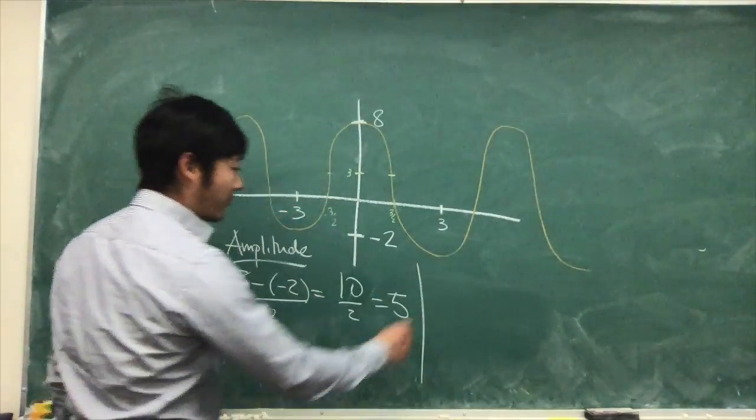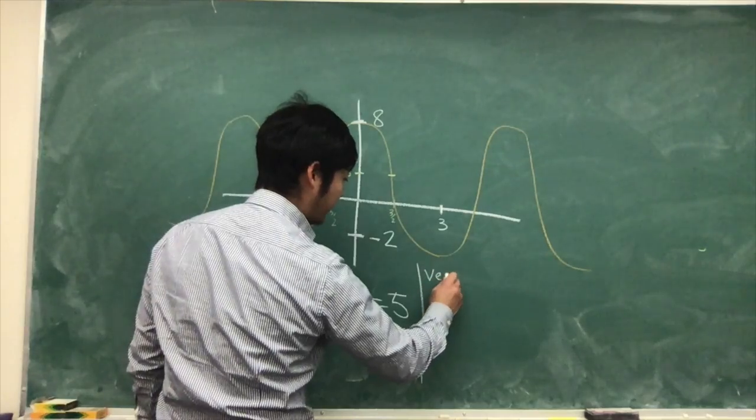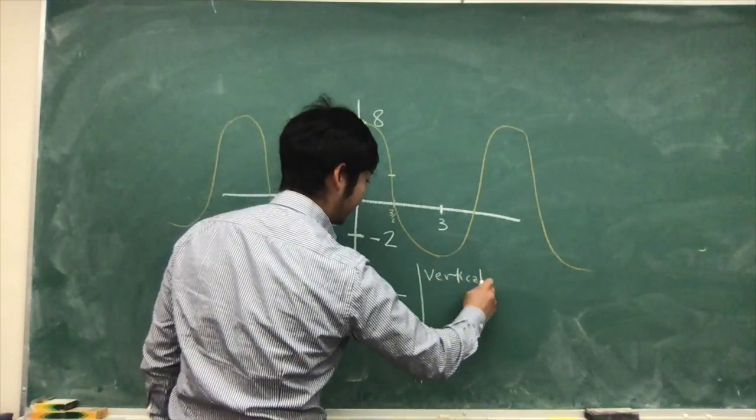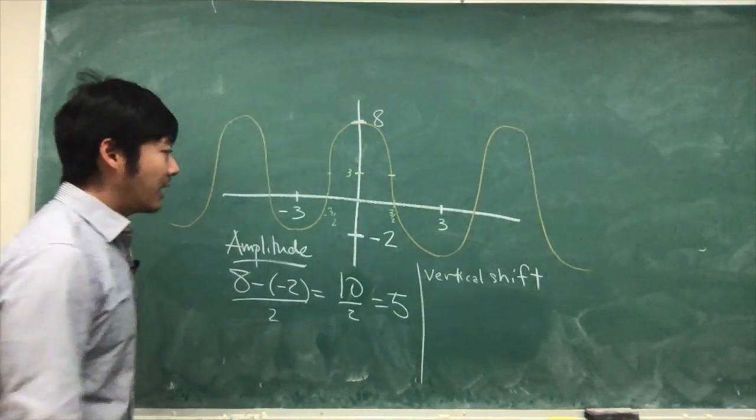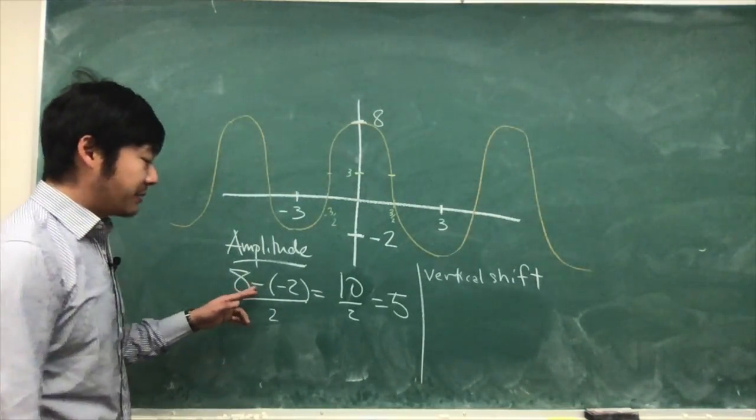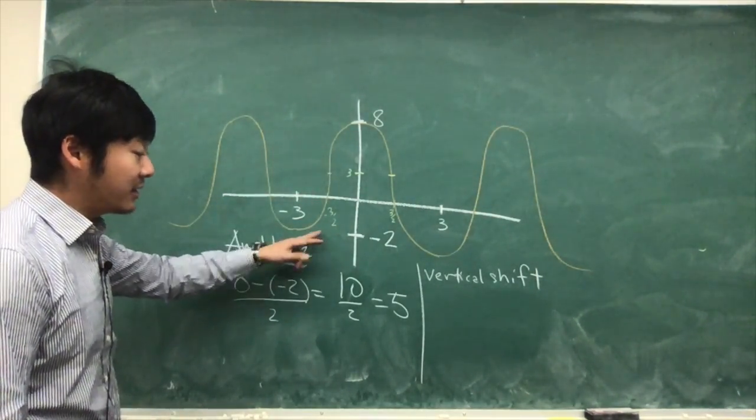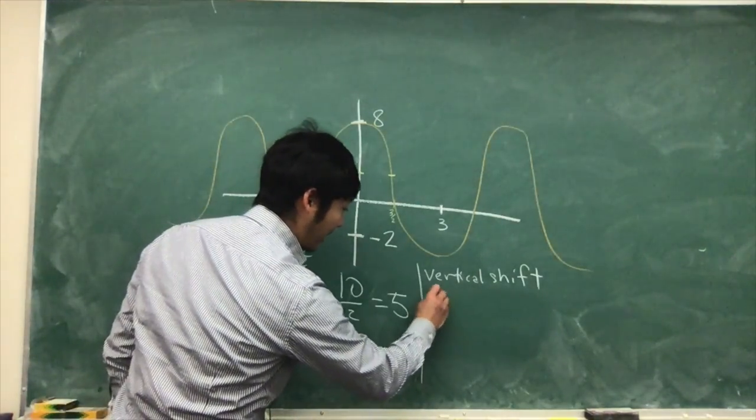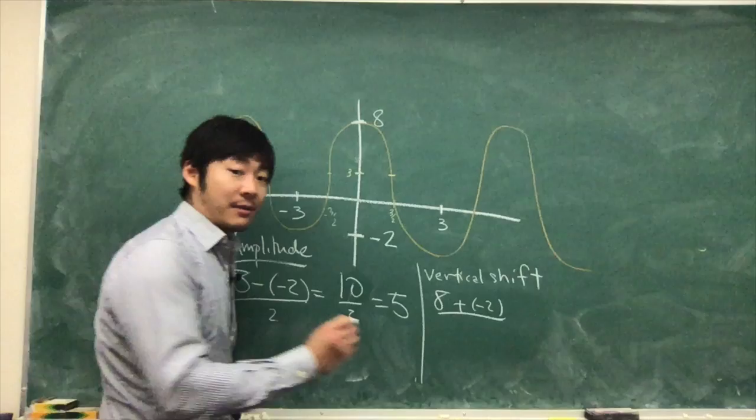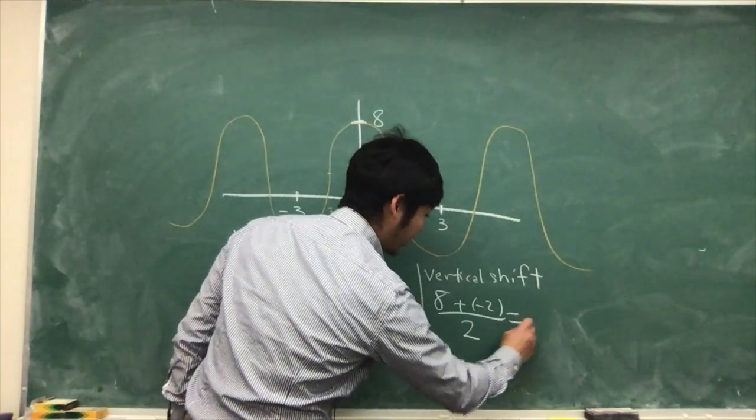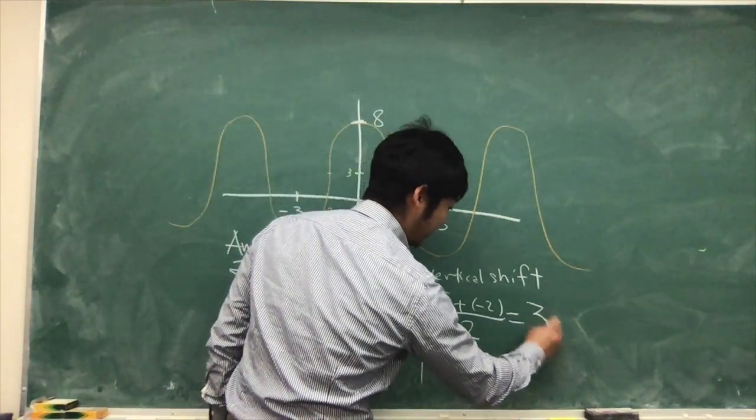Our vertical shift is found by adding the biggest and the smallest instead of subtracting. 8 plus negative 2, then divide by 2. So this is 6 over 2, which is 3.